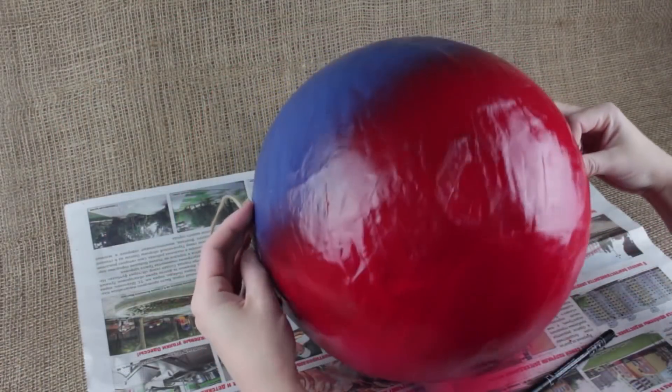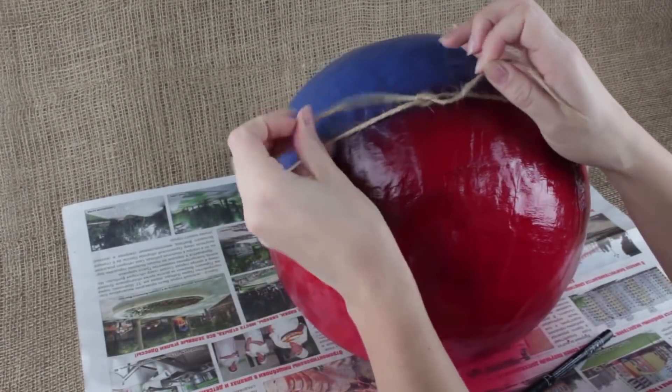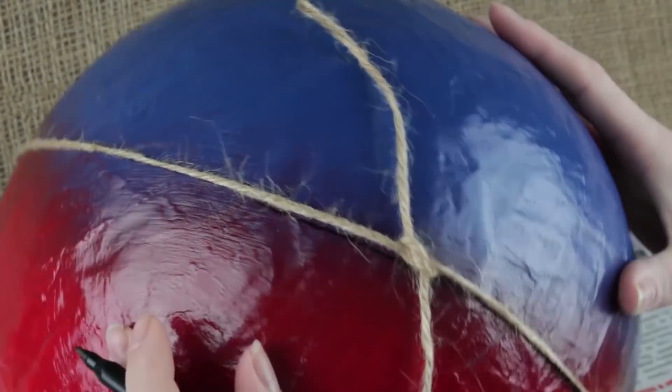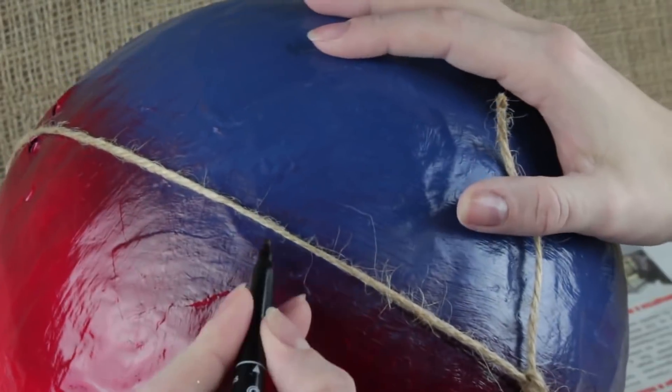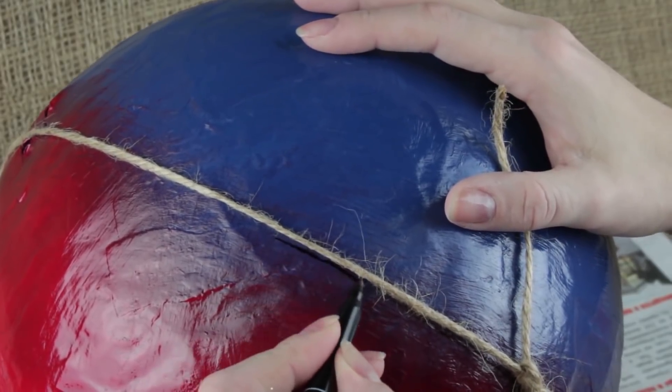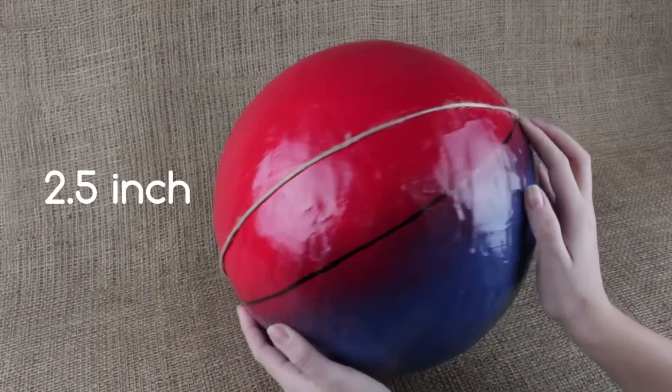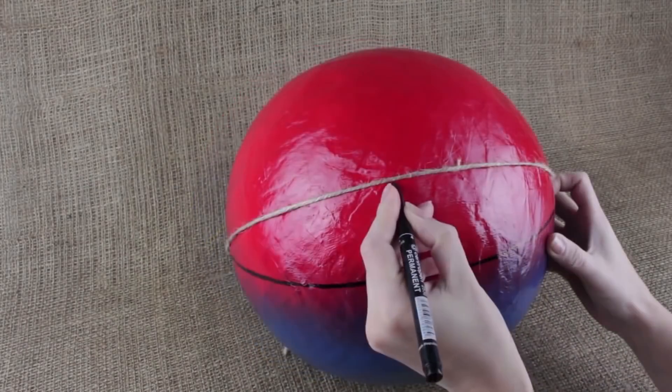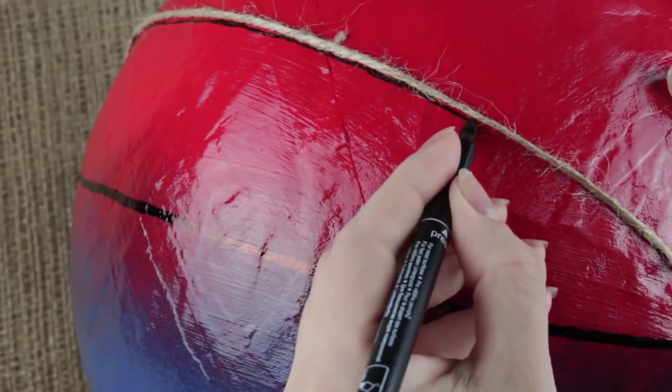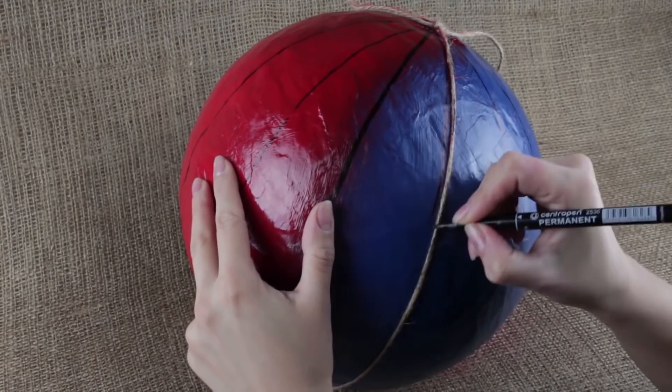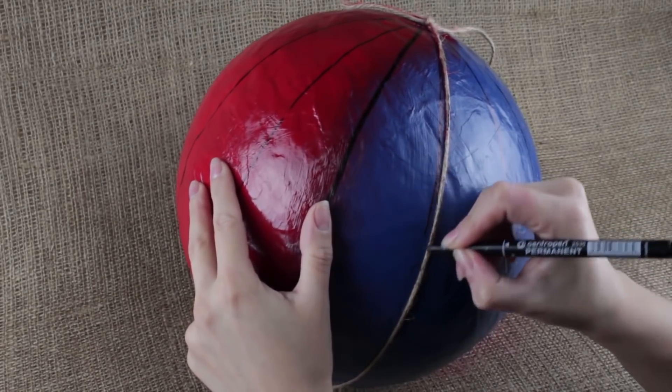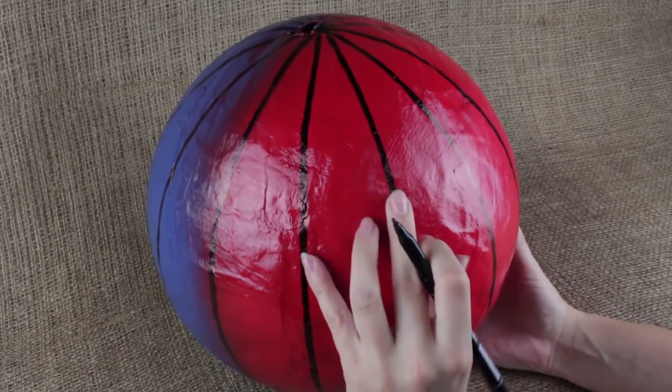Tie a string along the border. Draw a line with a black marker using the string as a guide. Shift the string 2 1/2 inches off. Draw another line. The line pattern resembles a peeled orange. Define the lines making them thicker.